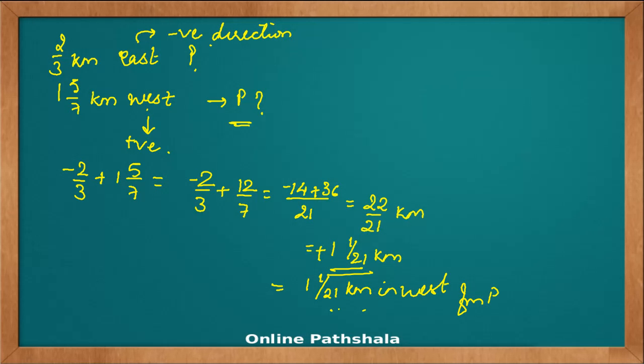So we arrive at the same answer, and it does not depend upon which direction we take as positive or negative. The resultant rule remains the same: if we have opposite situations, either one you can take as positive and the second as negative, and you will arrive at the same answer.